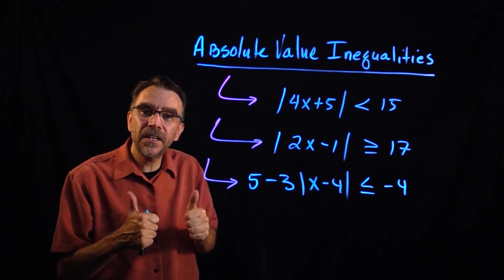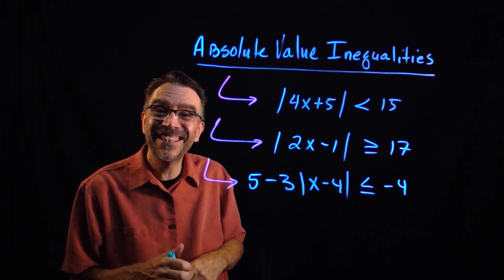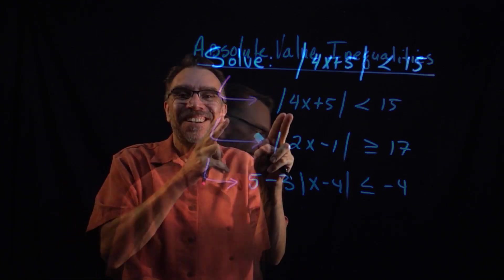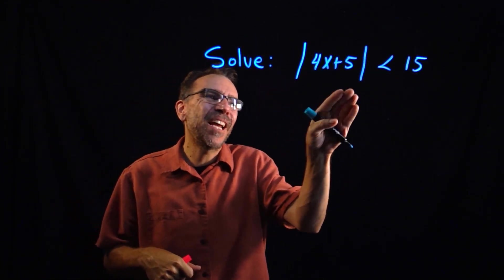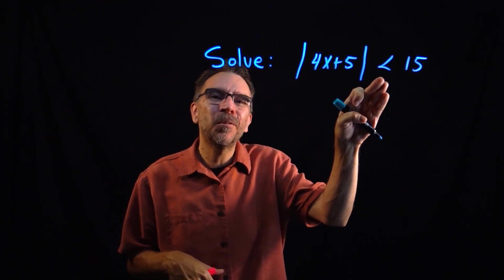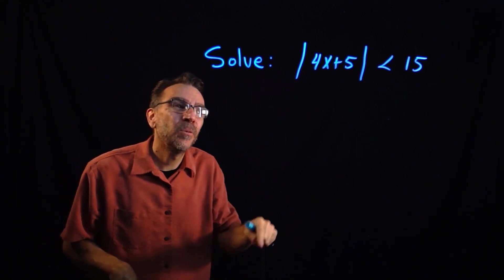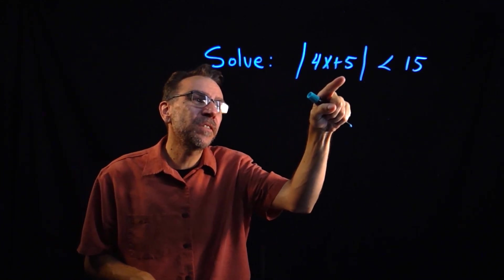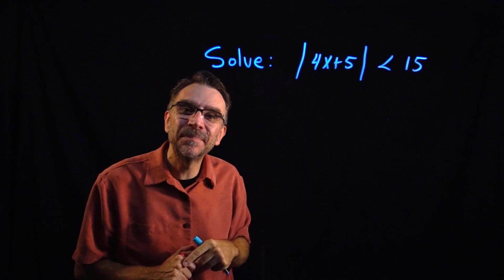If you like the video or if these help you in any way, don't forget to hit the like button. Let's go ahead and get started. Here we're asked to solve an absolute value inequality that's less than — we have the absolute value of 4x plus 5 is less than 15.